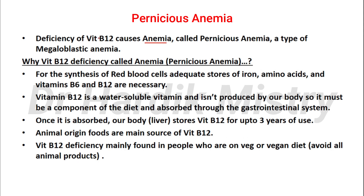Deficiency of vitamin B12 causes pernicious anemia, which is a type of megaloblastic anemia. For the synthesis of red blood cells, adequate stores of iron, amino acids, and vitamins B6 and B12 are necessary. Vitamin B12 is a water-soluble vitamin not produced by the body, so it must be a component of the diet and absorbed through the gastrointestinal system. Once absorbed, the liver stores vitamin B12 for up to three years. Animal-origin foods are the main source of vitamin B12, so deficiency is mainly found in people on vegetarian or vegan diets.